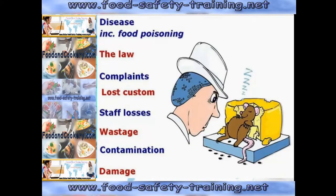So what is the problem with pests? First of all, they cause harmful diseases including food poisoning. It has been the law since about 1949 that all food premises must be devoid of pests. Pests could also give rise to complaints, lost custom, staff losses, wastage of food especially if it is contaminated, and damage to food.